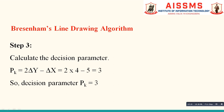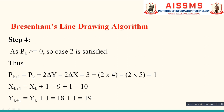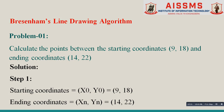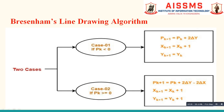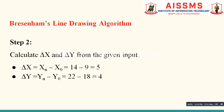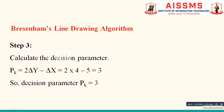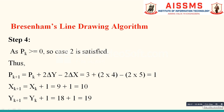Our next step is to check the value of pk against the two conditions of the algorithm: pk less than 0, or pk greater than or equal to 0. When pk is less than 0, we use the first set of formulas; when pk is greater than or equal to 0, we use the second set of formulas. In our case, pk is 3, which means it is greater than or equal to 0. Therefore case 2 is satisfied, and we use these formulas to calculate pk+1, xk+1, and yk+1.